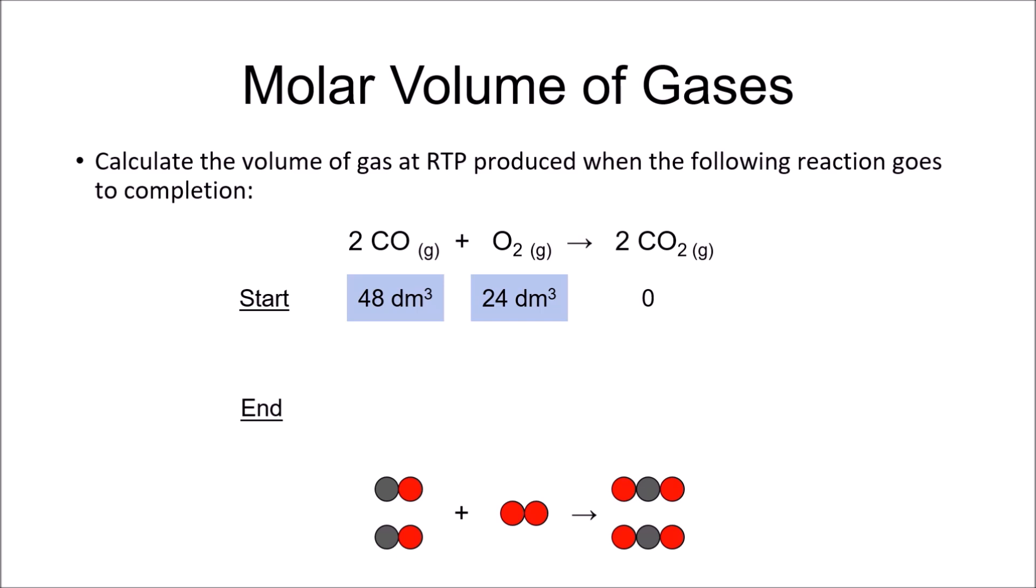So here they want us to calculate the volume of gas at room temperature and pressure produced when the following reaction goes to completion. Two moles of carbon monoxide have a volume of 48 cubic decimetres, whereas one mole of oxygen has a volume of 24 cubic decimetres. Two moles of carbon monoxide react with one mole of oxygen to produce two moles of carbon dioxide which have a volume of 48 cubic decimetres. Subtract the volumes of reactants and add the volume of carbon dioxide to get your answer.